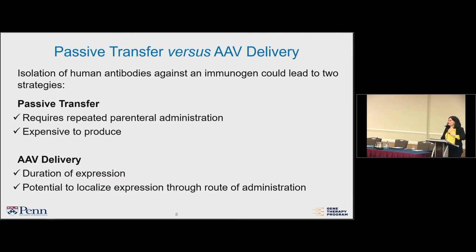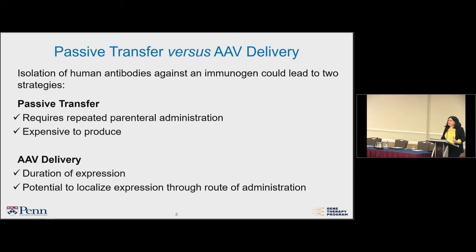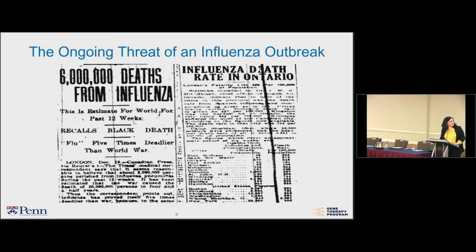In terms of the pros and cons of passive transfer versus AAV delivery: passive transfer requires repeated parental administration and is very expensive and time-consuming to produce the antibodies. For AAV delivery, duration of expression is key, and depending on the target tissue you can have sustained, high gene expression and localize expression through the route of administration. There's also a continuously ongoing threat of influenza outbreaks — even this year we've had significant mortality and morbidity because the flu vaccine wasn't effective for the particular strain.